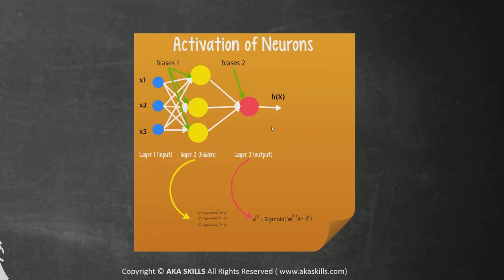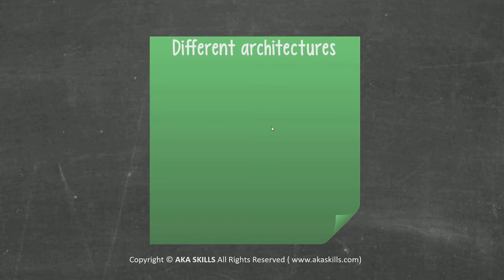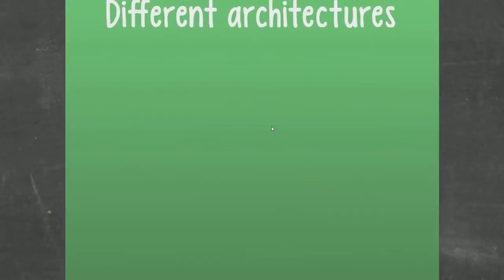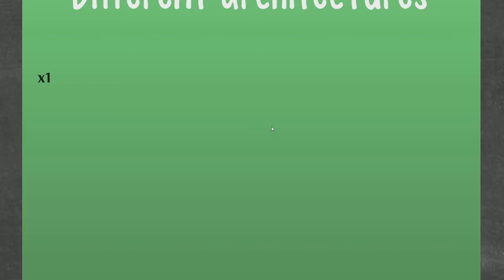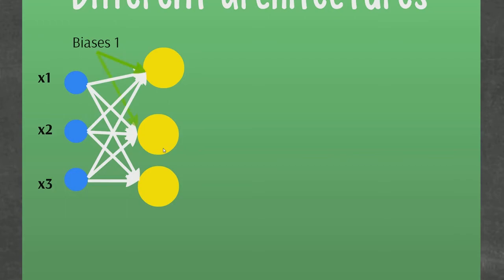I think the neural networks model is really simple and really huge. So let's see some different architectures. We saw the architecture with three cells for the first hidden layer. We had only one hidden layer and these are the weights, and then we feed the biases.